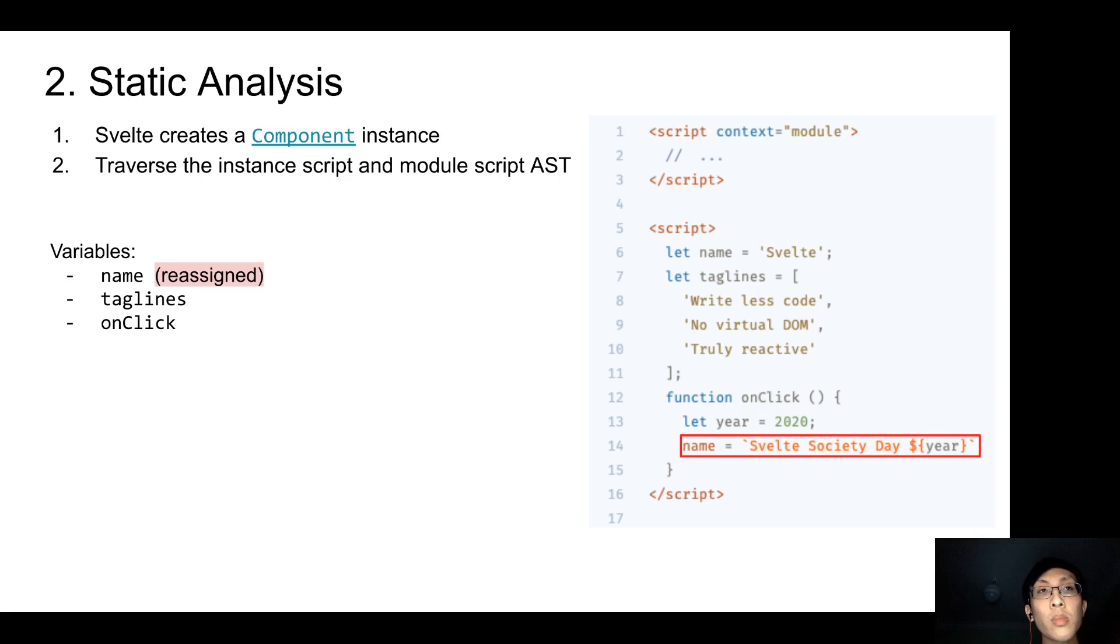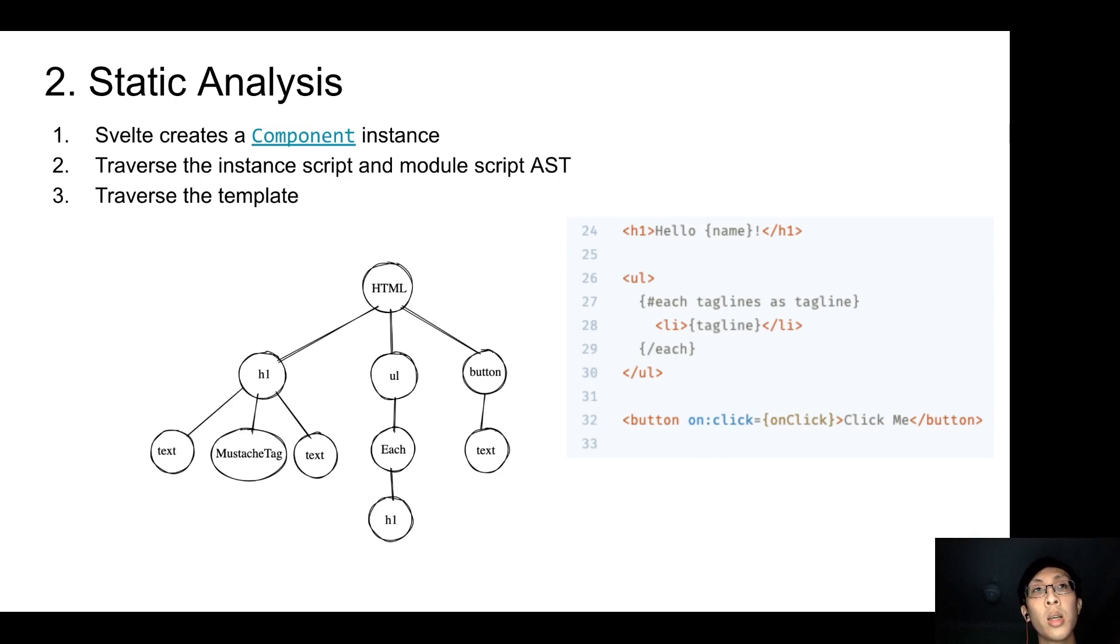Next, it will traverse the template AST. So during the traversal, when it encounters expressions, it will look up the variables that we collected previously, and then mark them as referenced. This is because variable that is not referenced from the template does not need to be reactive.